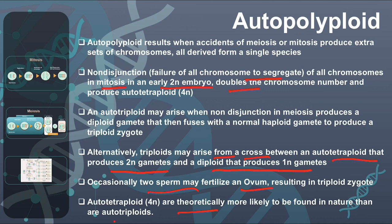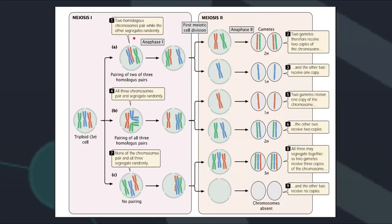Autotetraploids are theoretically more likely to be found in nature than autotriploids. In triploids, there are three types of segregation: first, some chromosomes pair while others segregate randomly; second, all chromosomes pair and segregate randomly; third, none of the chromosomes pair and all segregate randomly. In all three processes, the distribution of chromosomes in the resulting gametes is abnormal.